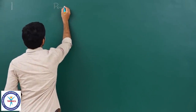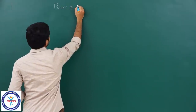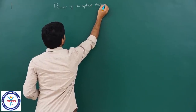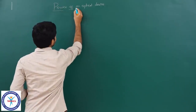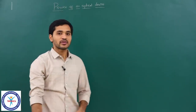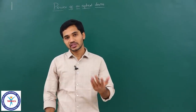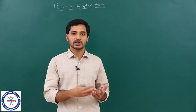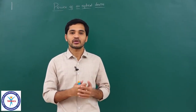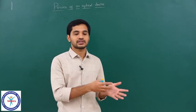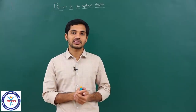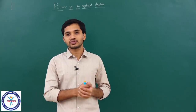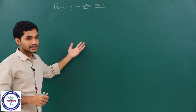First of all, power of lens — or power of an optical device. This power has nothing to do with the power discussed in work, power, and energy. That power is the rate at which work is done, or joule per second. This is optical power — a completely different concept.